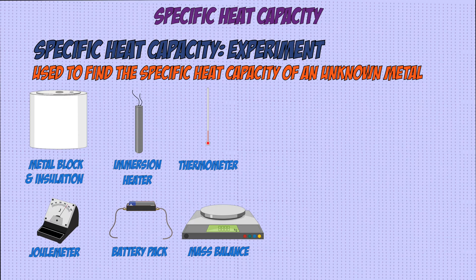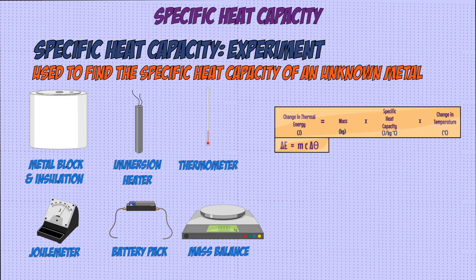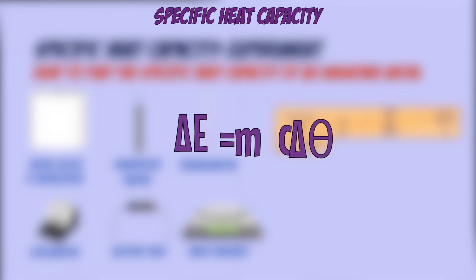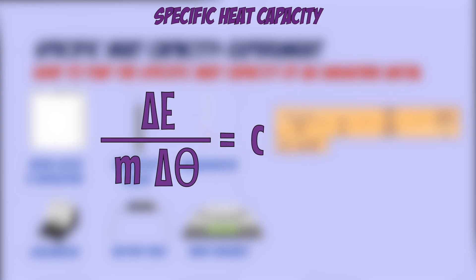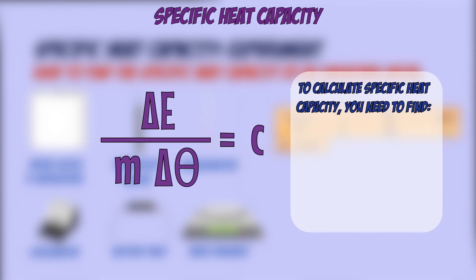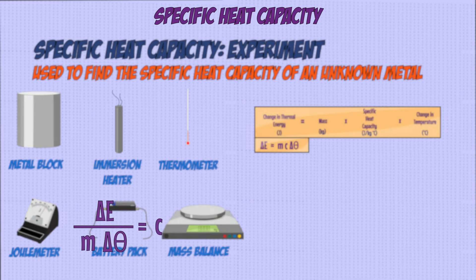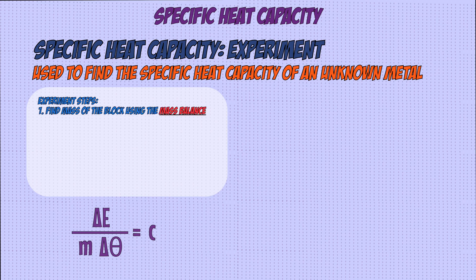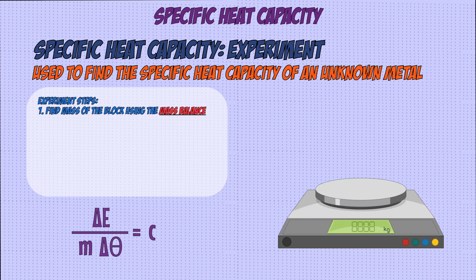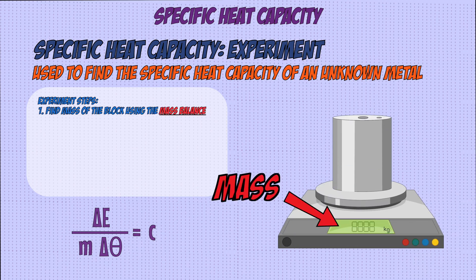If you rearrange the equation to make specific heat capacity the subject, you can see that to find out what it is, you need to find the mass, the amount of energy added to the block, and the temperature change of the block. So to find mass, your first step is to use the mass balance to weigh the block and note down its value.